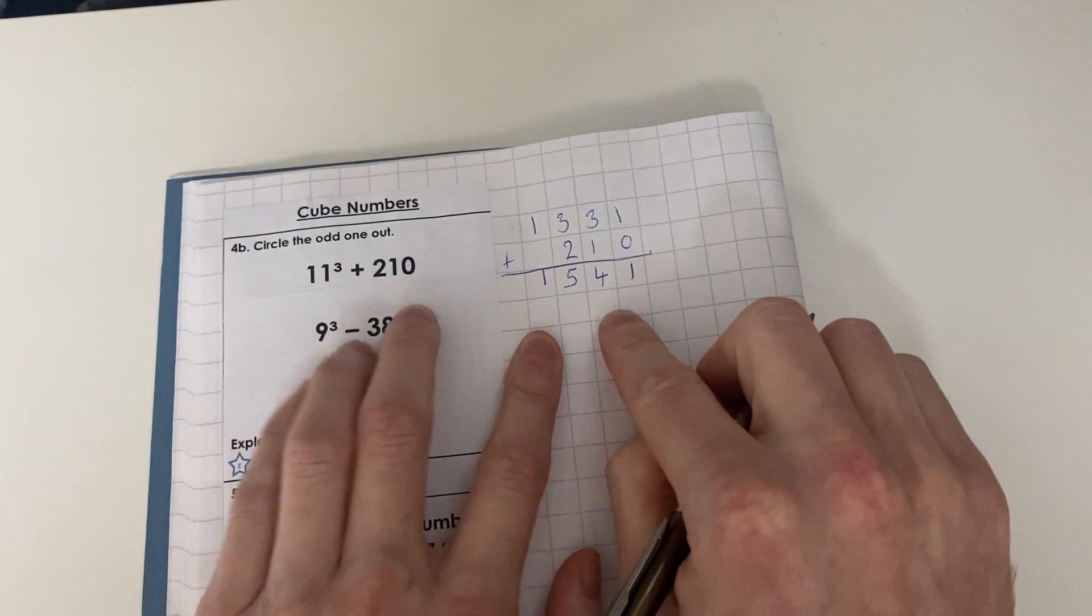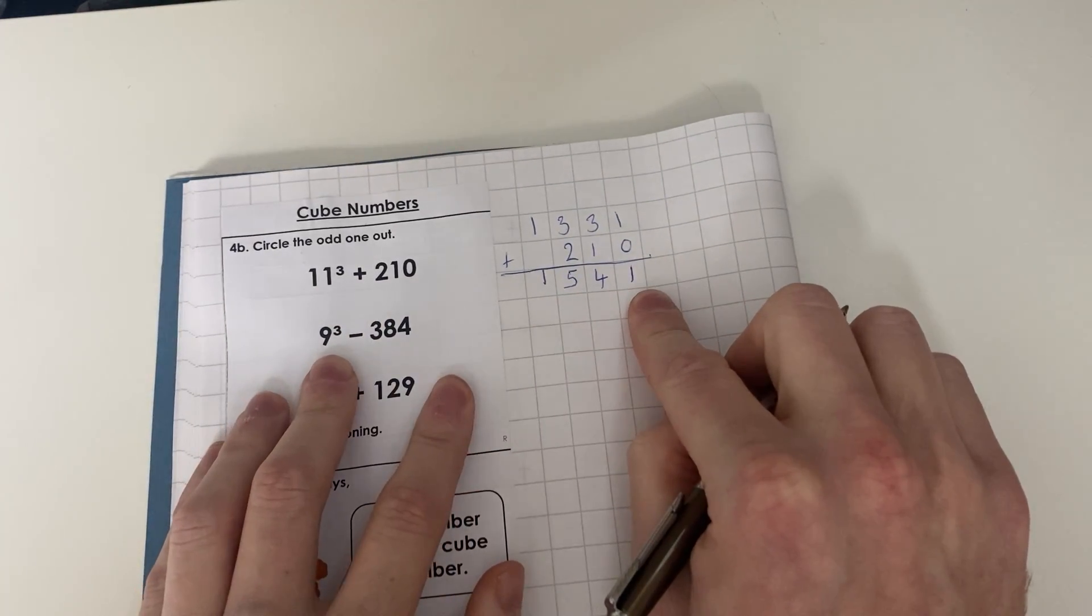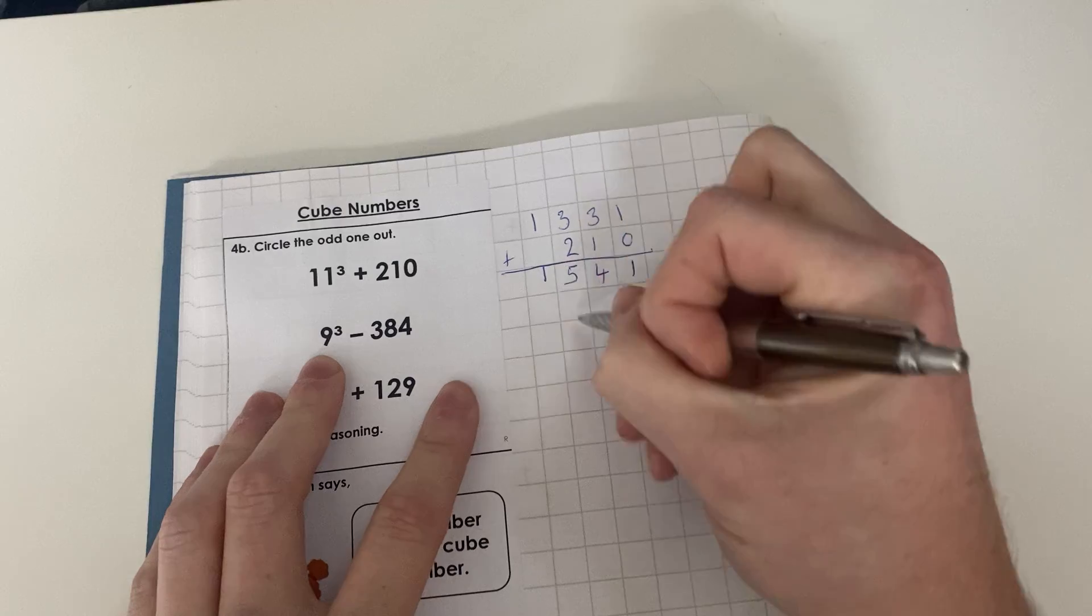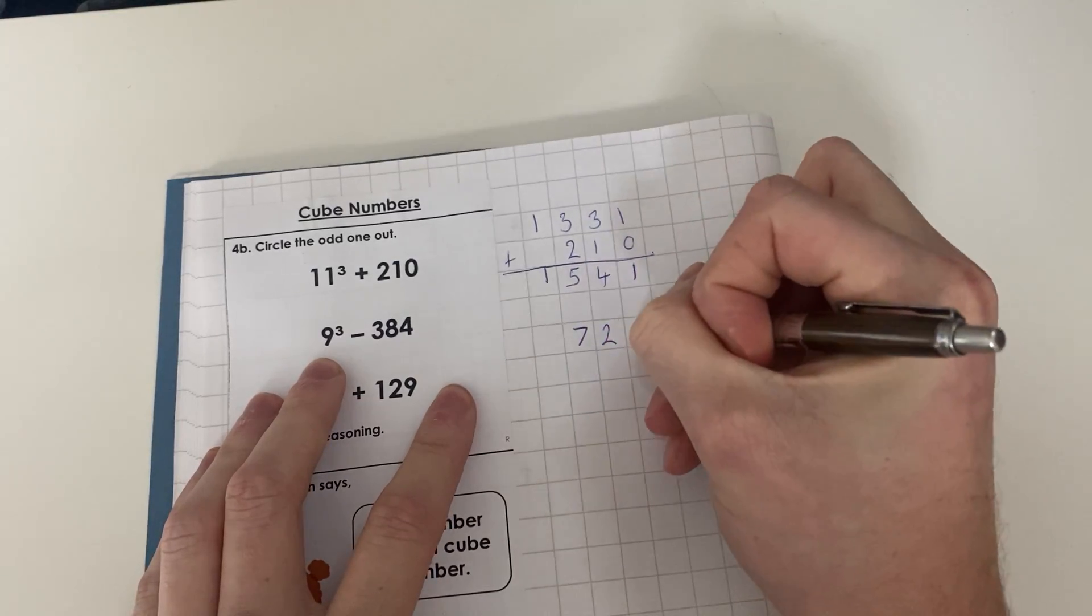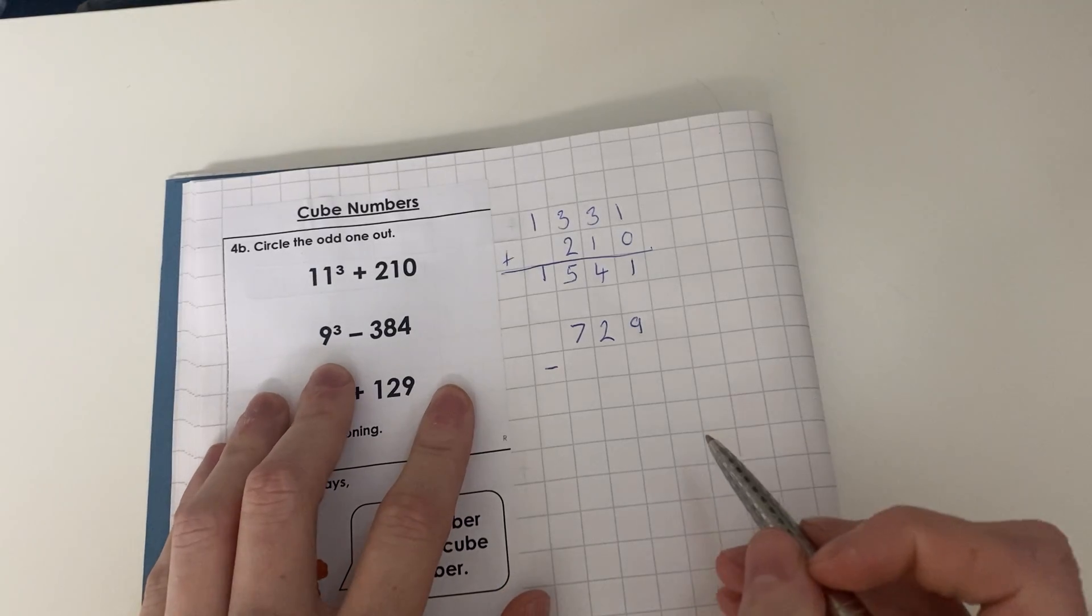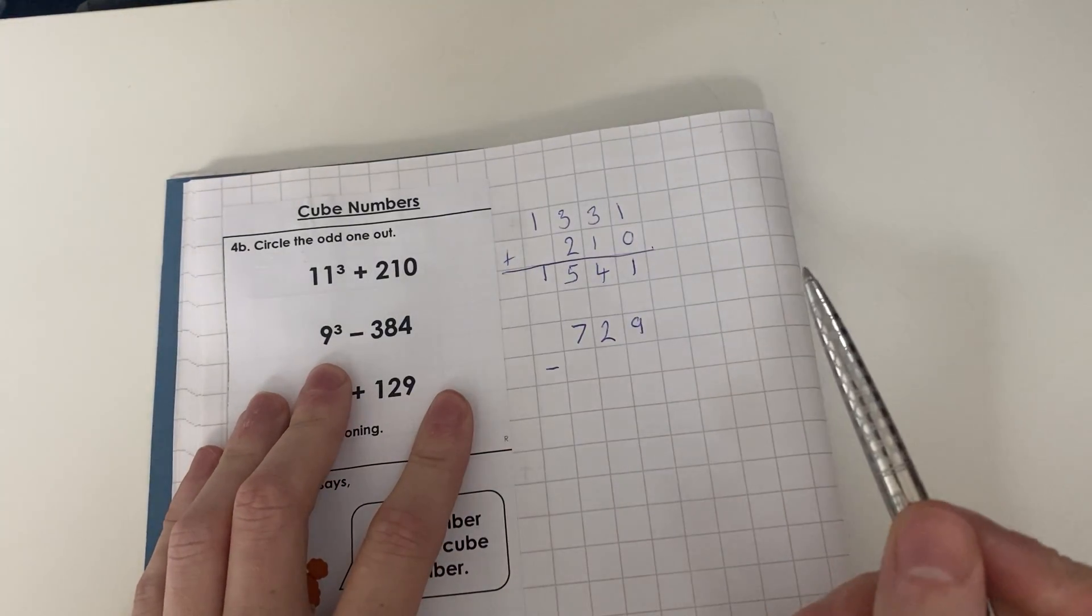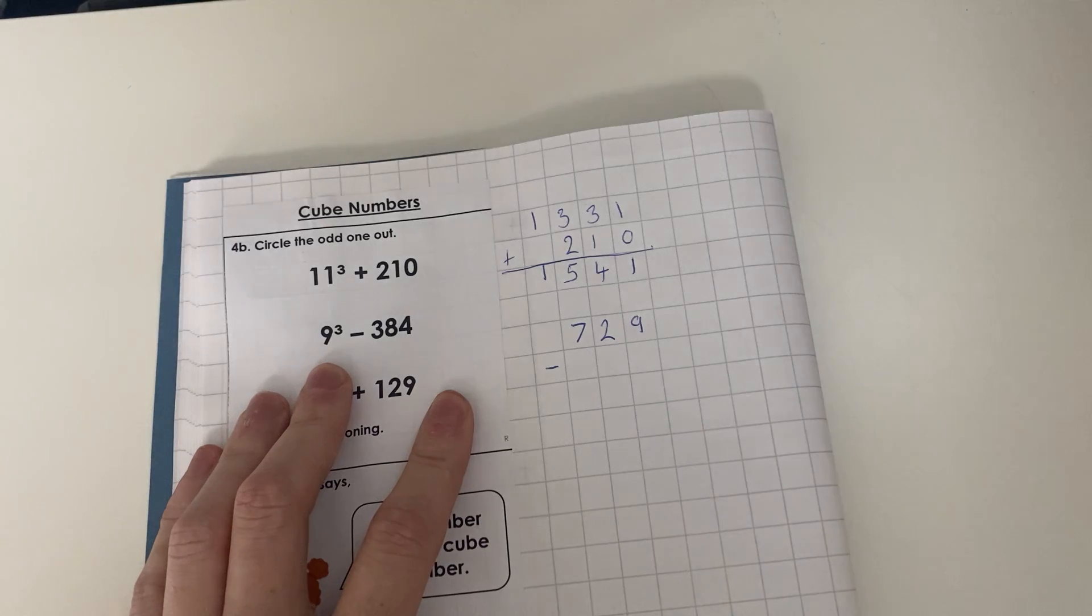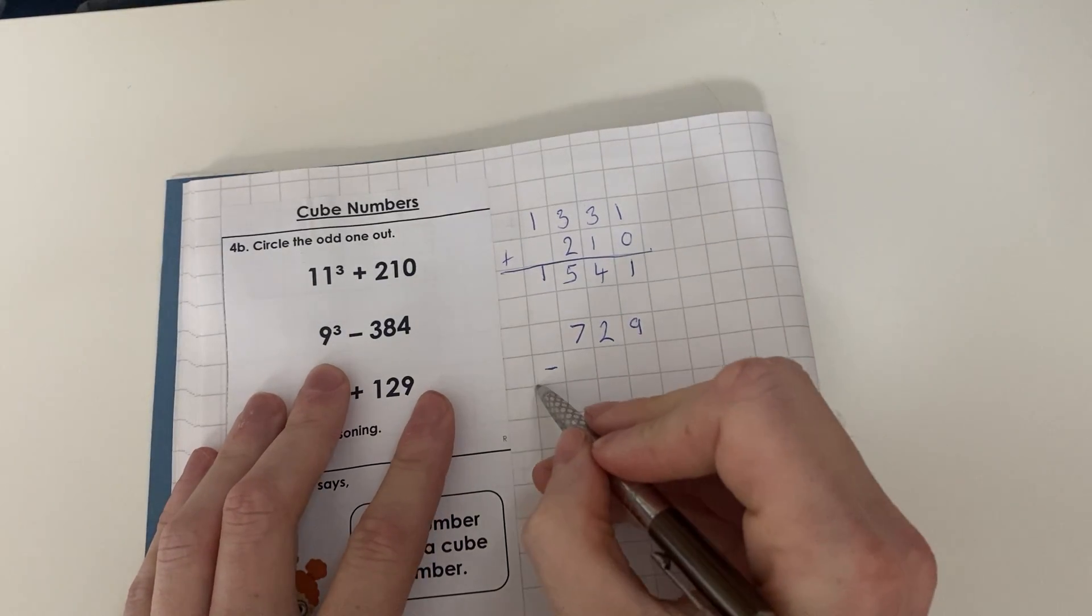We'll work out what this one is. 9 cubed is 729, and as you can see Mr. Taylor's knowledge of his cube numbers is really good. He's a teacher but he's taught himself to remember the cube numbers. He doesn't have the answers here because he's managed to recall and memorize the answers.